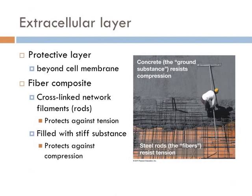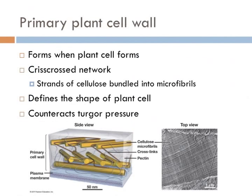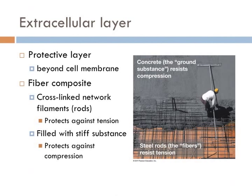Most cells possess a protective layer or wall that forms just beyond the membrane. This layer generally consists of a fiber composite, a cross-linked network of long filaments surrounded by a stiff ground substance. The function of this layer is to provide rigidity and strength to the cell. The rods or filaments protect against tension and the ground substance protects against compression. Tension is force or pressure from pulling something apart, whereas compression is force or pressure from pushing things together.